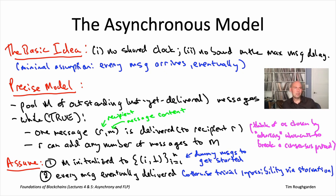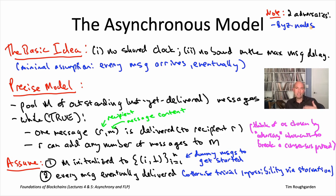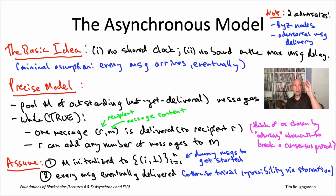One way to see that the asynchronous model is challenging for consensus protocol design is that we now really have two different types of adversaries. We have the same adversary as before, where up to f nodes might be Byzantine. But the asynchronous model adds a second adversary — whoever controls message delivery. It's totally possible that Byzantine nodes are acting in some weird way to mess everybody up, enabled by the entity controlling message delivery playing along.